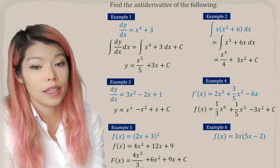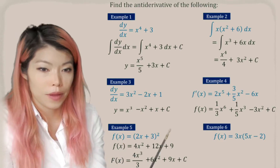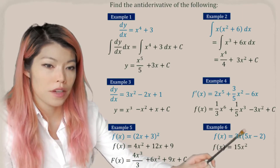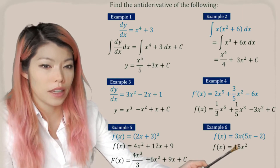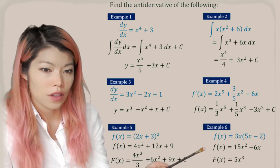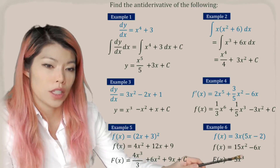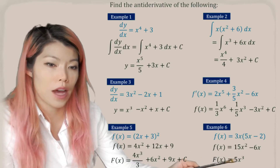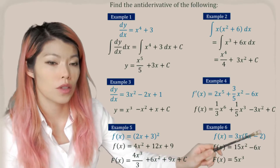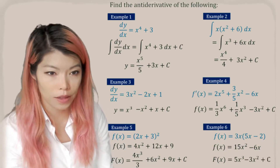Notice that the plus c is in the anti-derivative and not in the original equation — be very careful. Here we have f(x) again; we expand first. So 3x times 5x is 15x squared; 3x times minus 2 is minus 6x. Now we anti-derive it, writing the capital F(x): power of 2, add 1 is 3, dividing by 3 — 15 divided by 3 is 5. And then minus 6x to the power of 1 becomes x to the power of 2, divided by 2 becomes minus 3x squared. Don't forget the c.